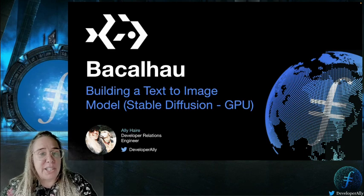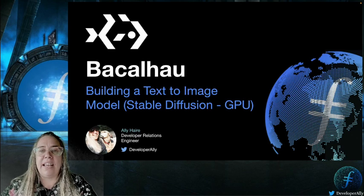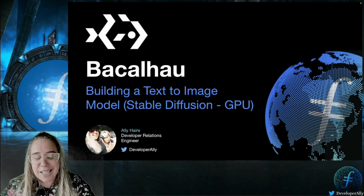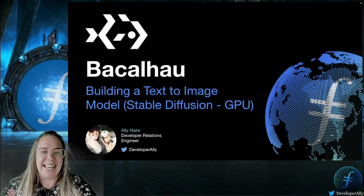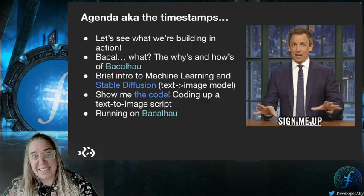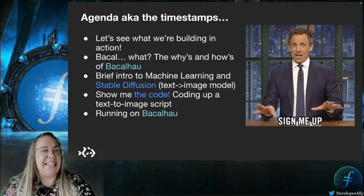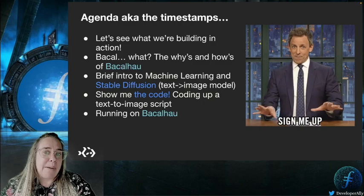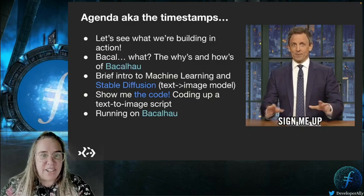I'm going to be showing you a really cool example of how to build your own text-to-image code and then run it on Bacalhau, which for those that haven't heard of it isn't just a Portuguese fish, but a peer-to-peer computation network. Here are timestamps for those who want to jump to a specific section. First, we'll see this fully built model in action on Bacalhau, then I'll chat about what Bacalhau is, how it works and what advantages it can offer.